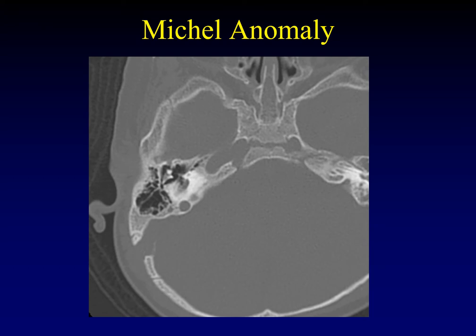At one end of the spectrum of cochlea and vestibule abnormalities is the Michel anomaly, in which there are no discernible elements of the membranous labyrinth within the otic capsule — just nothing there, a total whiteout. A fun test question is how you distinguish the Michel anomaly from severe bony labyrinthitis ossificans where everything is whited out. It turns out the cochlear promontory forms in response to the basal turn of the cochlea — so in Michel anomaly, there's no cochlear promontory, whereas in labyrinthitis ossificans there is one, since a cochlea was present at some point.